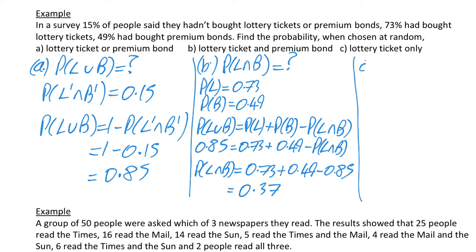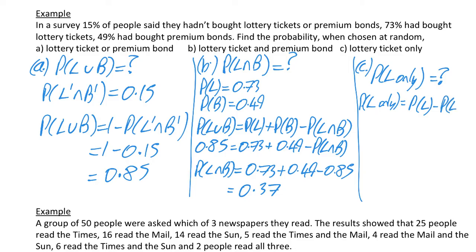For part C, it asks for the probability of lottery only. The probability of lottery only equals the whole probability of a lottery ticket minus the probability of the lottery ticket and the premium bond. So that's 0.73 minus 0.37, and when you do that on your calculator you will get 0.36.